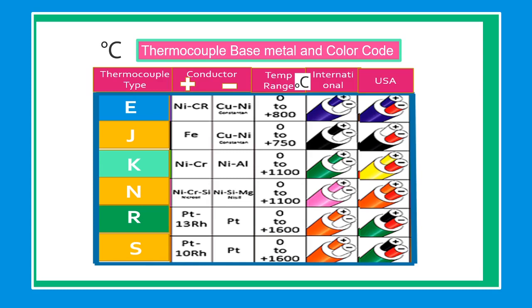For color code chart, refer at the chart for your reference. The temperature range in type E in degrees Celsius are 0 to 800 degrees. In type J, 0 to 750 degrees. In type K, 0 to 1100 degrees. In type N, 0 to 1100 degrees. And type R, 0 to 1600 degrees Celsius.